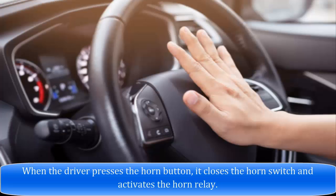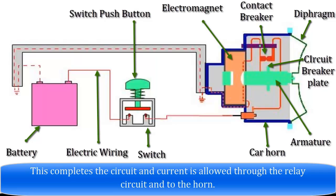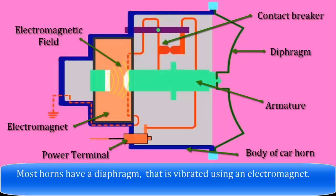When the driver presses the horn button, it closes the horn switch and activates the horn relay. This completes the circuit and current is allowed through the relay circuit and to the horn. Most horns have a diaphragm that is vibrated using an electromagnet.